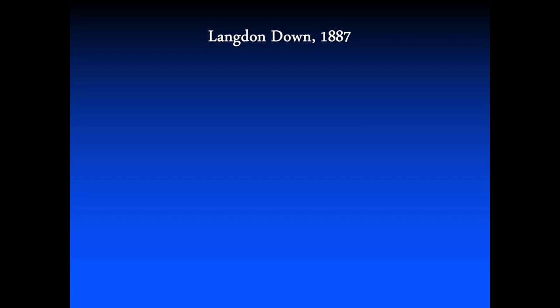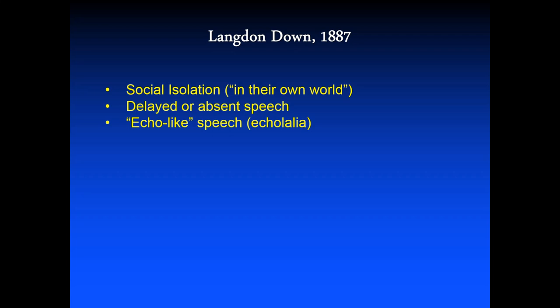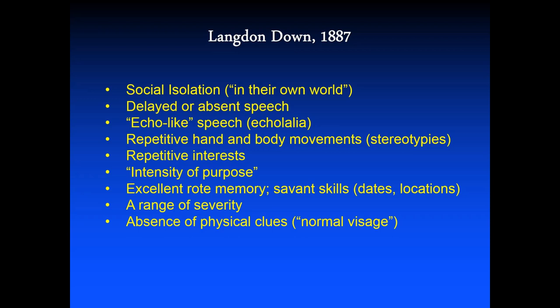Let's consider what Langdon Down described in his 1887 paper, based on observations at Earlswood Asylum from the 1850s: social isolation — he used the phrase 'in their own world,' which we still use today; delayed or absent speech, or when present, echolalia; repetitive hand and body movements, which today we call stereotypies; repetitive interests and intensity of purpose; excellent rote memory and savant skills for dates and locations. He also described a range of severity and an absence of outward physical clues. If you adjust for the flowery Victorian language, what he's giving us is not so different from what's in the DSM today.